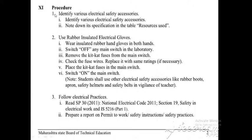Procedure: first, identify various electrical safety accessories and note down their specifications in the resources-used table for whichever safety accessories we use in the laboratory or while working in an electrical place. Then note down the resources used in our specification table. Use rubber insulated electrical gloves — wear insulated rubber hand gloves on both hands. Switch off any main switch in the laboratory. Remove the Kitkat fuses from the main switch. Check the fuse wire, and replace it with the same rating if necessary. Place the Kitkat fuses back in the main switch. Switch on the main switch. Students shall also use other safety accessories like rubber boots, apron, safety helmets, and safety belts under the vigilance of the teacher.